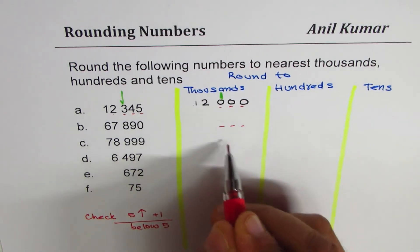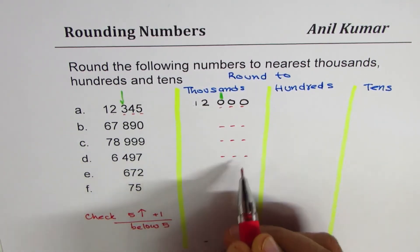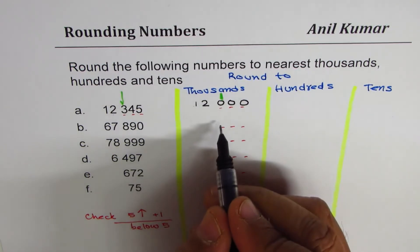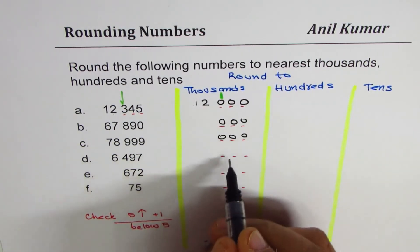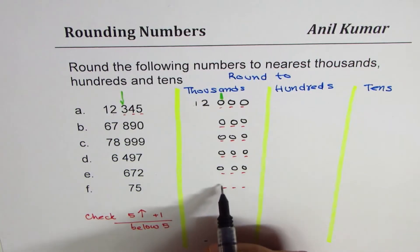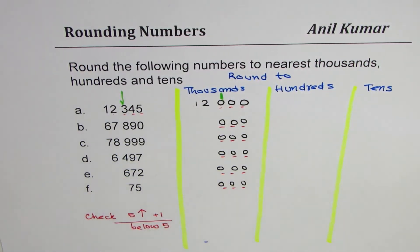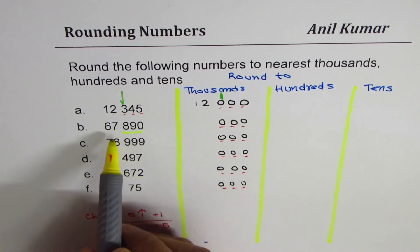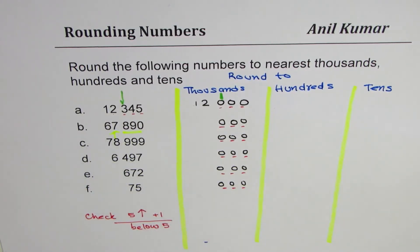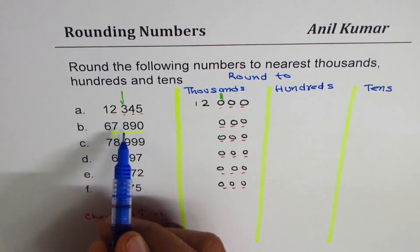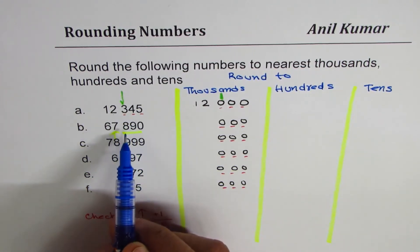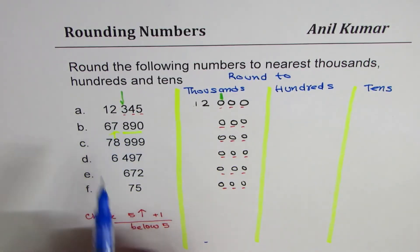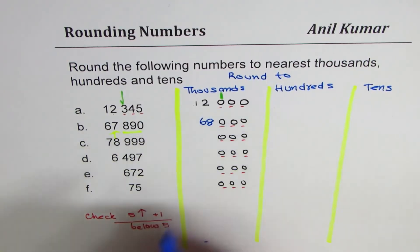Let's do the rest of them one by one, rounding to thousands. First step: just write three zeros. Now we look at the hundreds place. For 67,899 — the hundreds digit is eight, which is five or more, so we increase seven to eight. We get 68,000.